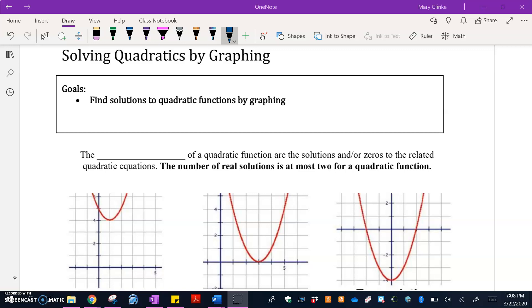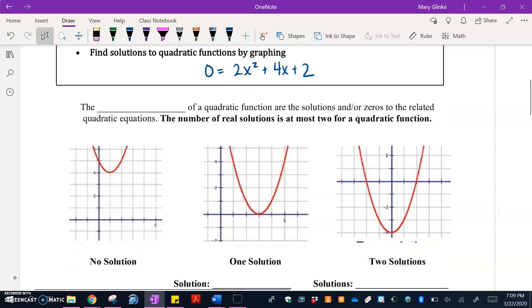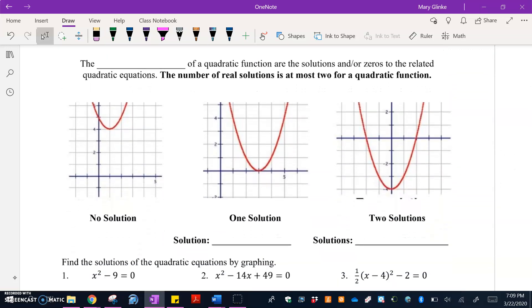Now our equations are going to look something like 0 = 2x² + 4x + 2 today. The y is going to be replaced with a 0 and we're going to be asked to figure out what x equals to make this true. Now the first way we're going to be solving quadratic functions is by looking at the graph.